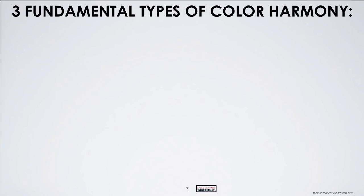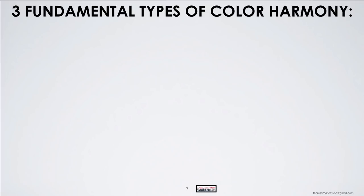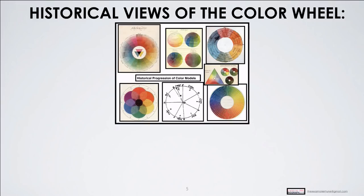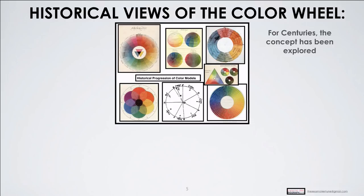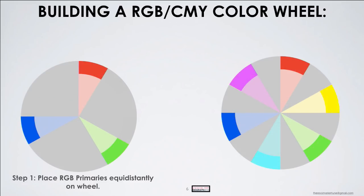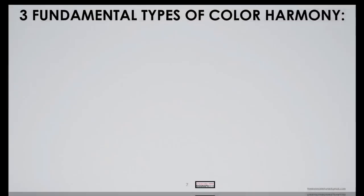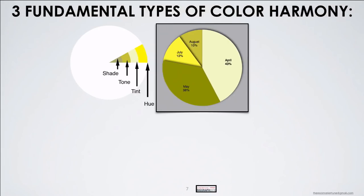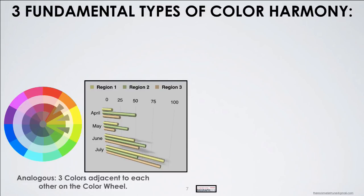Analogous color scheme — three colors next to each other on the color wheel, three adjacent colors. This is a very frequent color scheme in fashion design, often used. Then complementary — we covered that earlier — that would be blue and yellow opposing each other. Now look at my outfit carefully. What is my color scheme? I purposely did that.